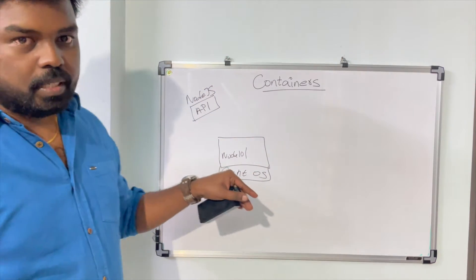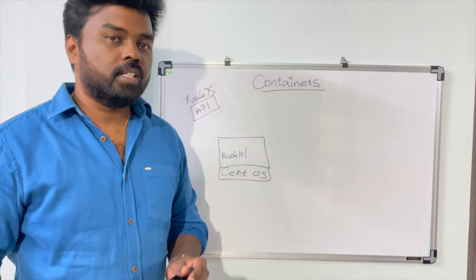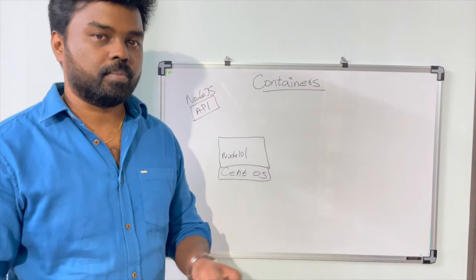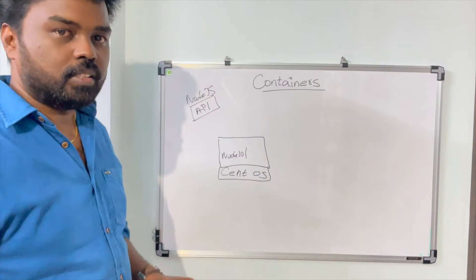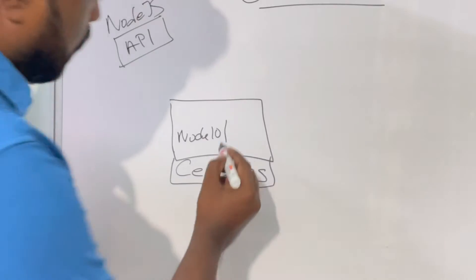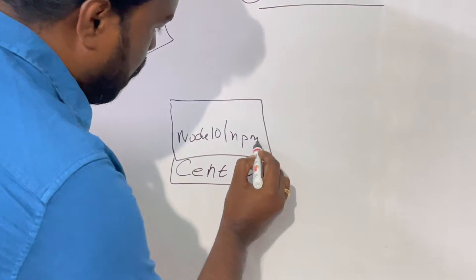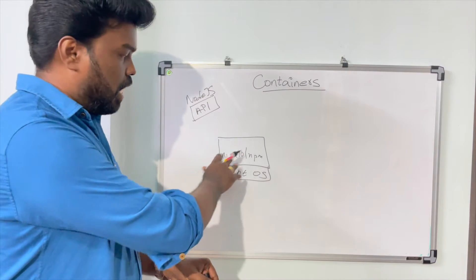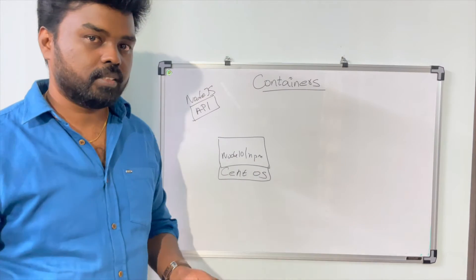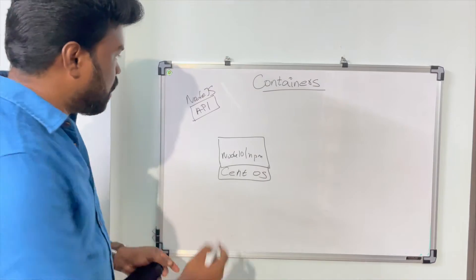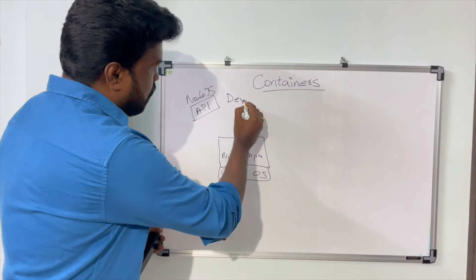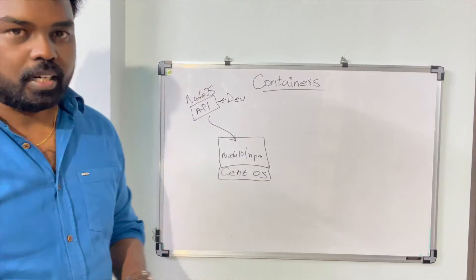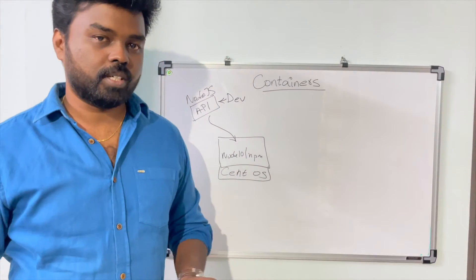Once the runtime has been installed, the next thing is to install all the necessary application dependencies for the application to run properly. In this case, we have to install all the necessary NPM dependencies. Once the operating system is up, the runtime is there, and all application dependencies are installed, we are ready to deploy the application. The developers will deploy the Node.js application into the new server, and the application will be running smoothly without any problem.